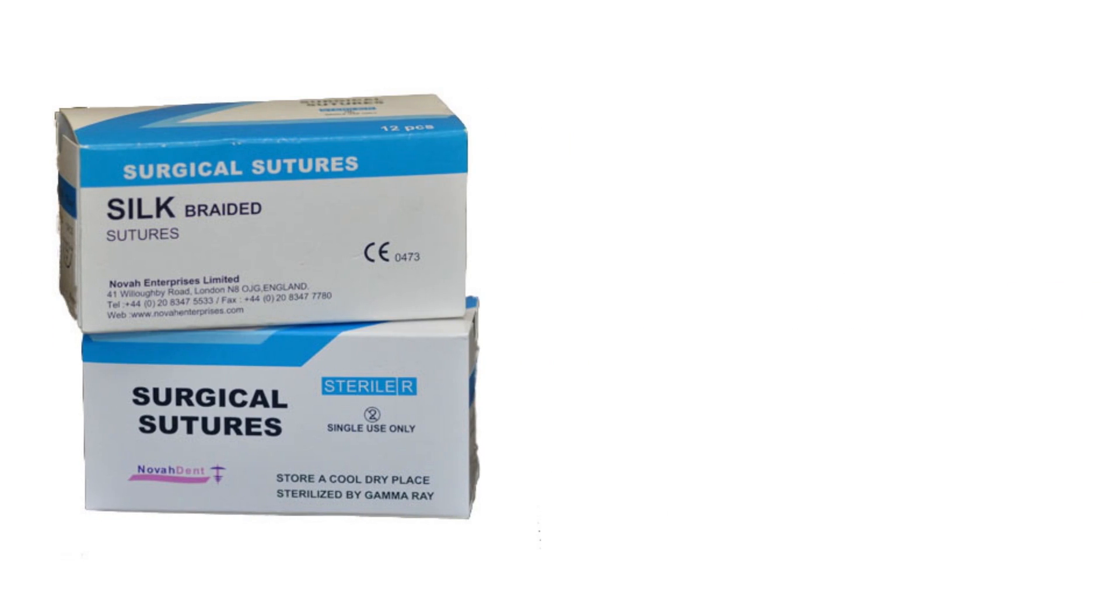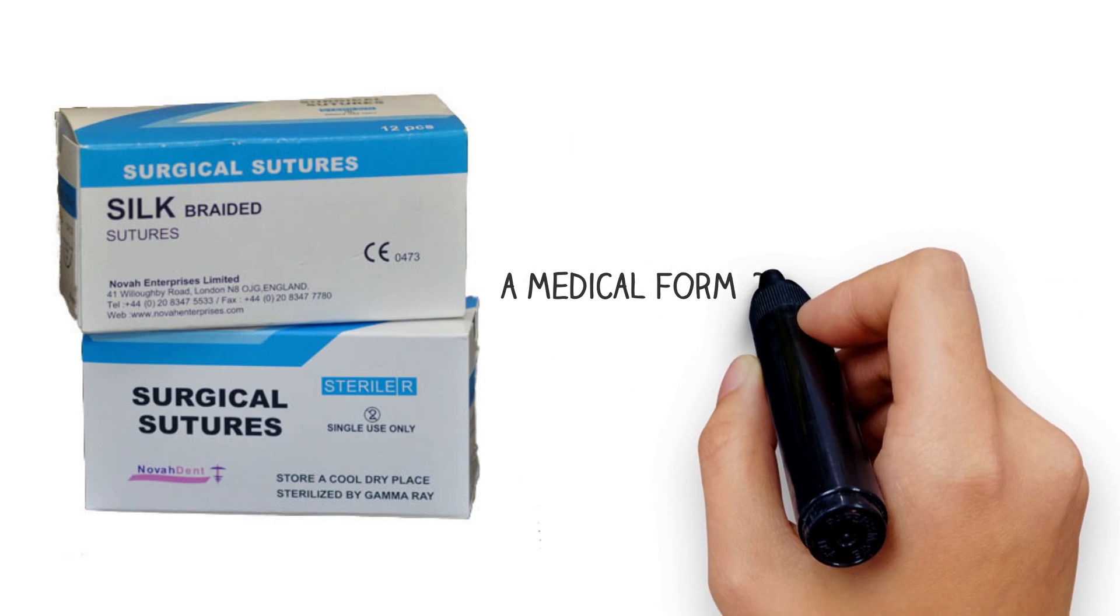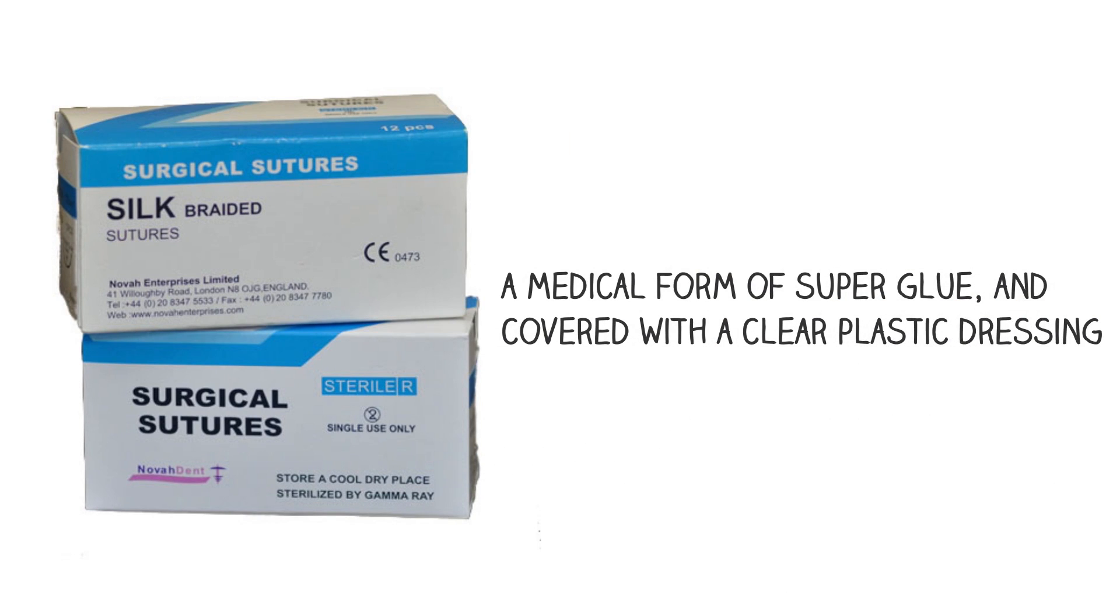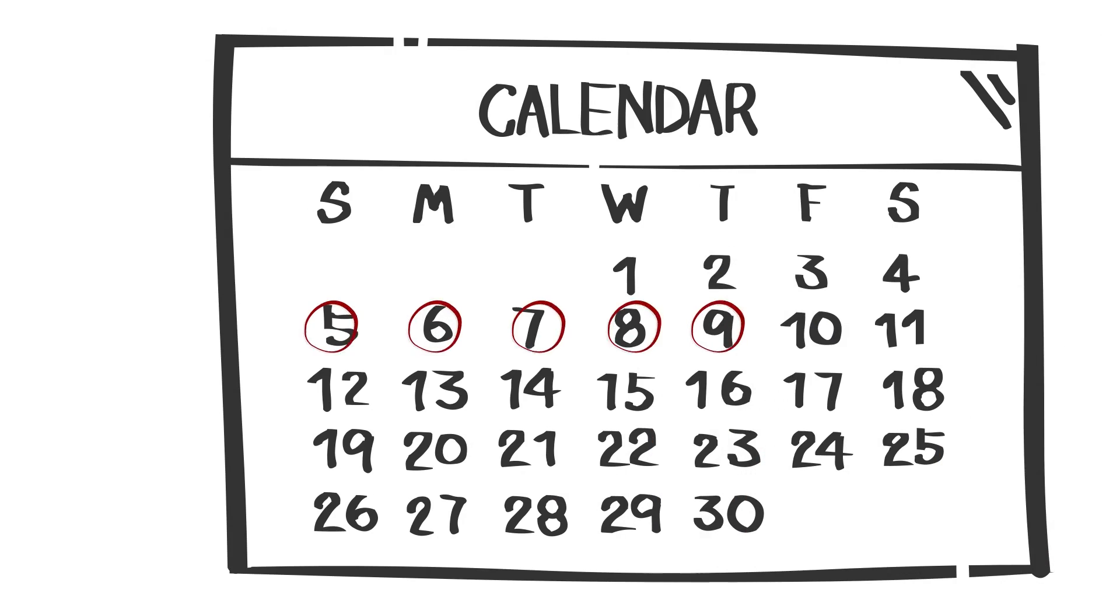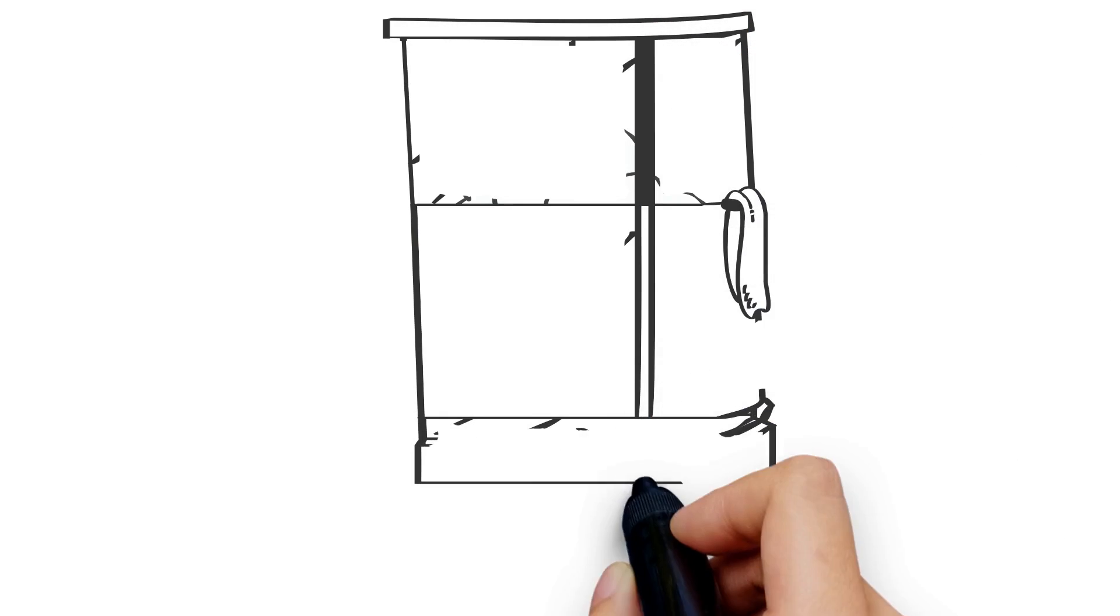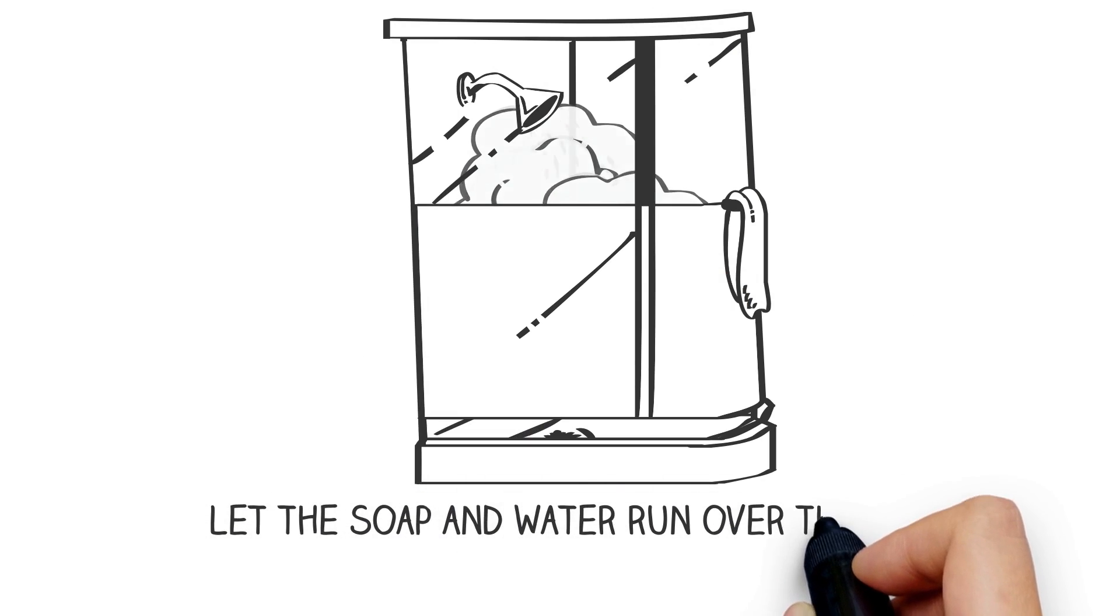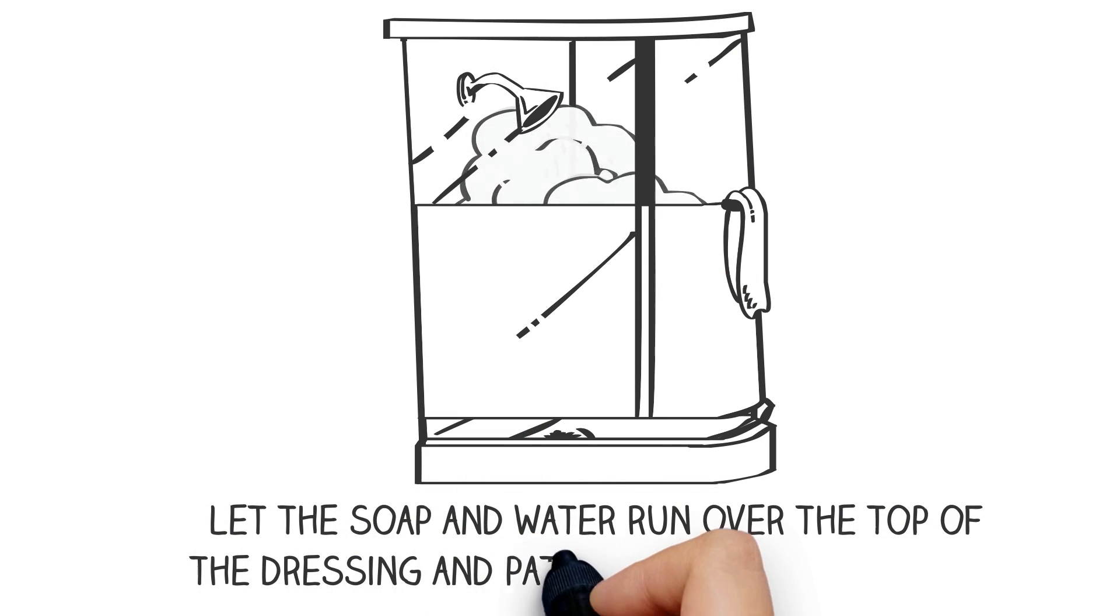Bathing and caring for your incision. The surgical incision is closed with an absorbable suture, a medical form of superglue, and covered with a clear plastic dressing. Leave this dressing on for 5 days. You can shower 24 hours after your operation. Let the soap and water run over the top of the dressing and pat it dry, but don't scrub it.